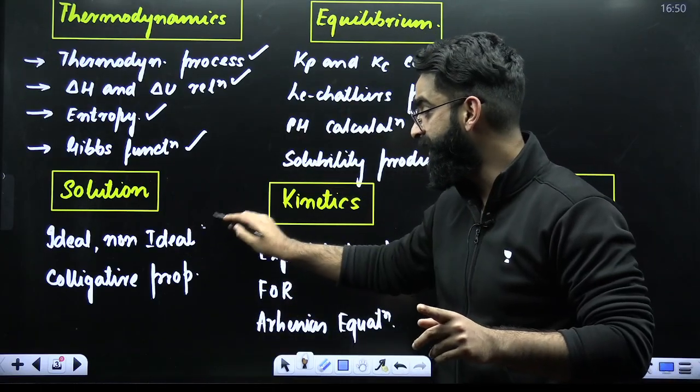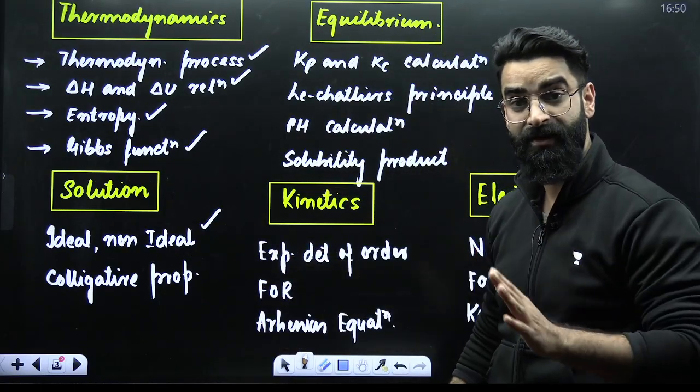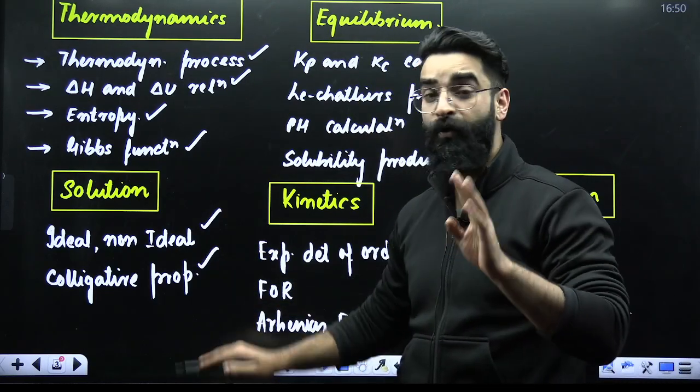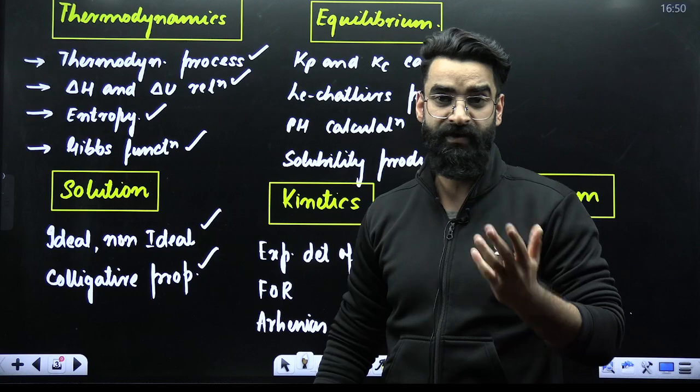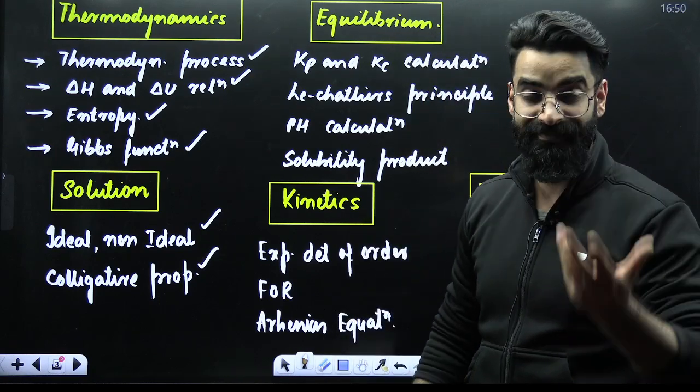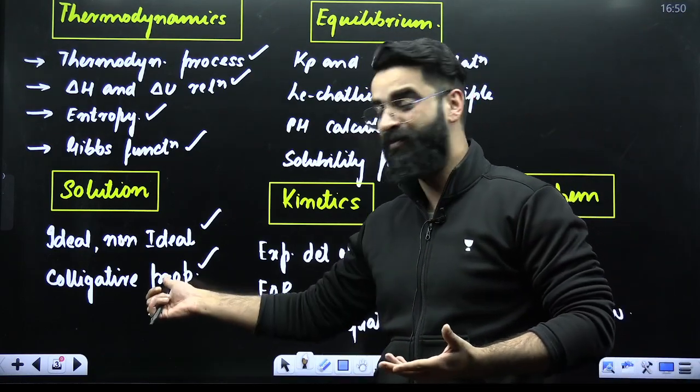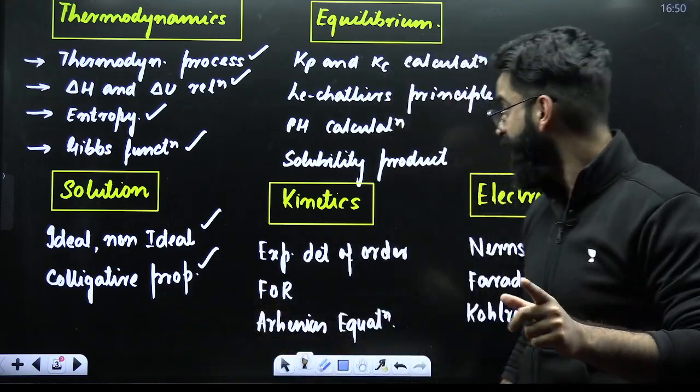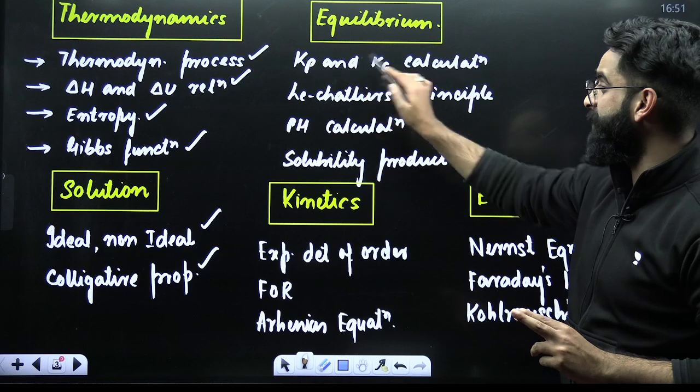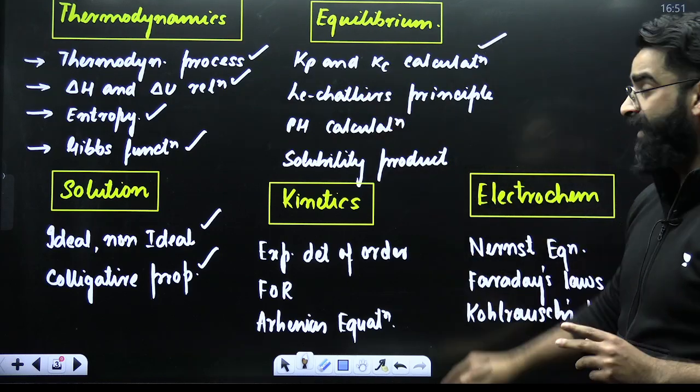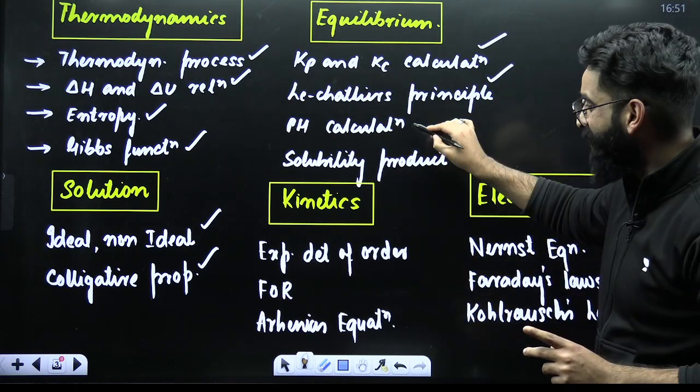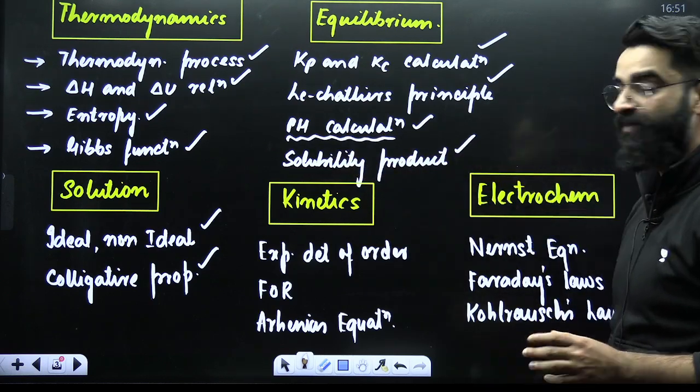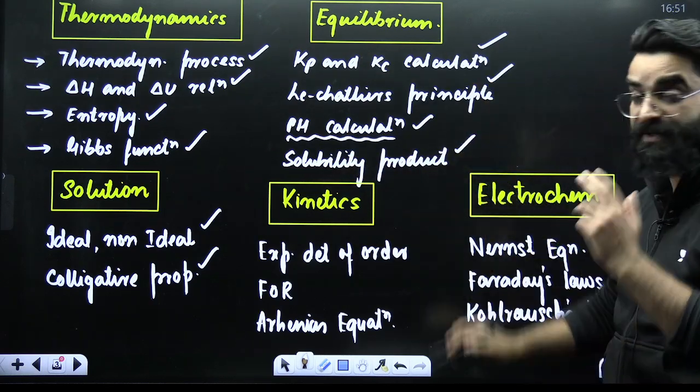From the chapter solution. Ideal non-ideal solution. The questions based on them which are related to your Raoult's law. Your colligative properties. All the four colligative properties are equally important because you never know whether they'll ask questions from elevation in boiling point, depression in freezing point. I'll mention categorically the colligative properties which you have to discuss in detail. When it comes to equilibrium. In equilibrium, Kp Kc calculation plays a vital role. Le Chatelier's principle is there. pH calculation, again, one of the sure-shot topics which every year is asked. And your solubility product. These are the sure-shot topics from the chapter equilibrium.